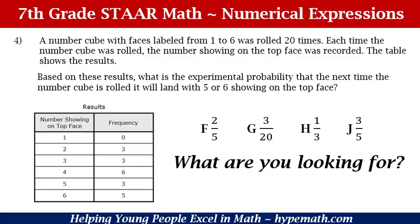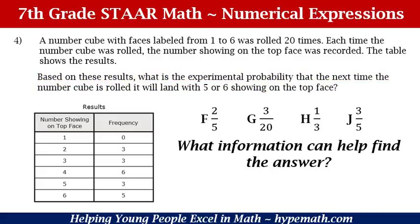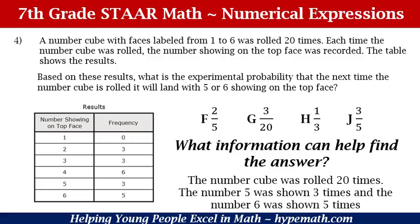Our critical question — what are we looking for? We are looking for the experimental probability that the next time the number cube is rolled it will land with 5 or 6 showing on the top face. What information do we need? We need to know that the number cube was rolled 20 times, that the number 5 was shown 3 times, and that the number 6 was shown 5 times.